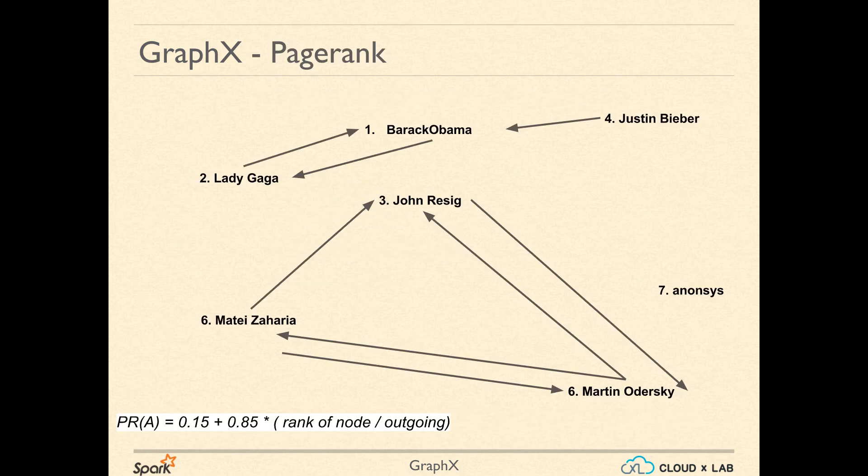Let us try to use PageRank of Spark GraphX. Say, we have the following graph of people. Justin Bieber is following Barack Obama. Barack Obama and Lady Gaga are following each other. Similarly, there are John Resig, Martin, and Matei following one another. While out of Barack Obama and Lady Gaga, Barack Obama is more important because he is being followed. This is what PageRank algorithm in a very simplistic form is.